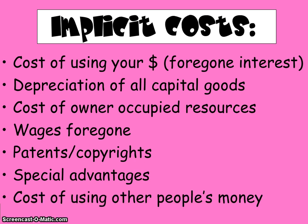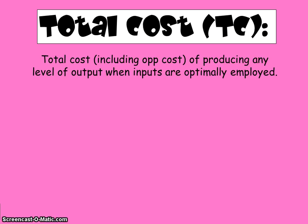Special advantages and the cost of using other people's money — if you have to borrow money to produce or begin or finance your company, then you're going to have to pay interest to borrow that money. Now we're going to get into some of the different cost figures you need to know: what they mean, what the graphs look like, how you calculate them. These will be used when we do our analysis of profit maximization and market structure analysis. Total cost is the simplest one — it's the total cost of producing any level of output when inputs are optimally employed. Economists do calculate implicit costs, so you can assume that the implicit costs are accounted for.